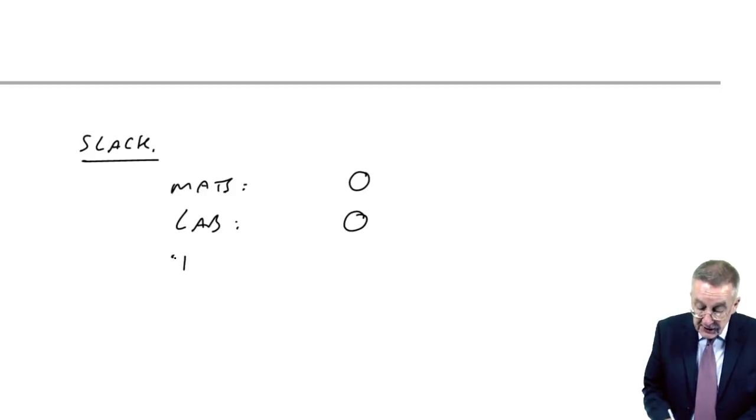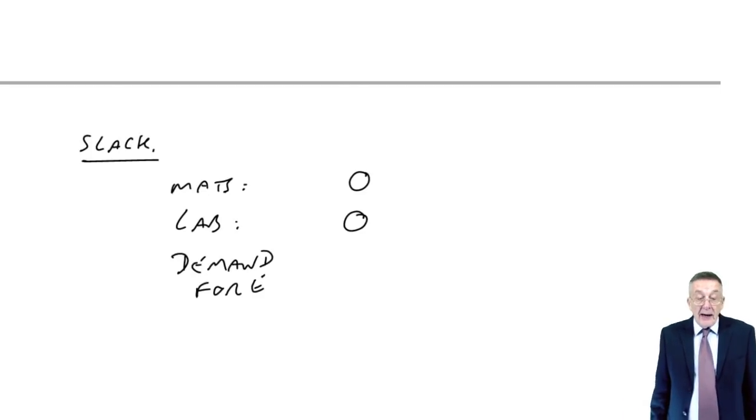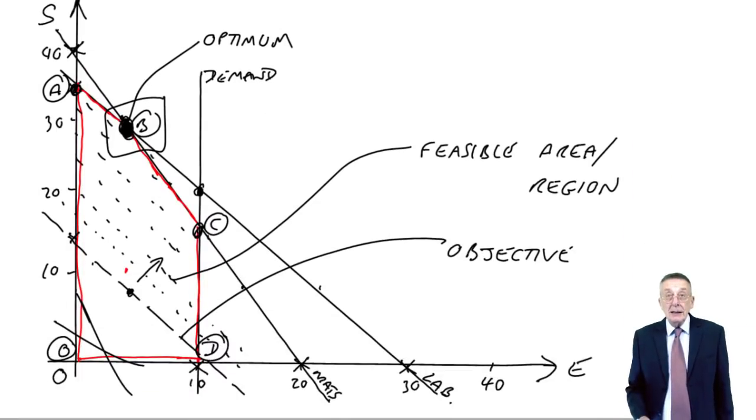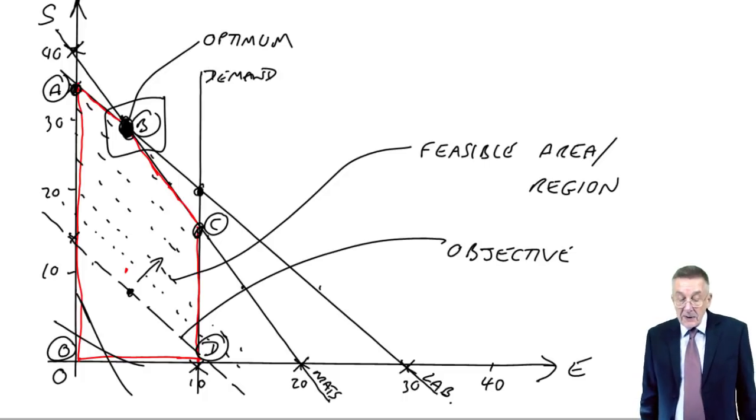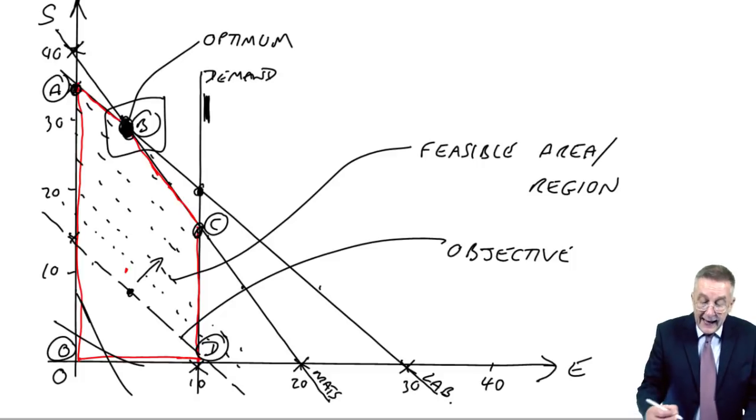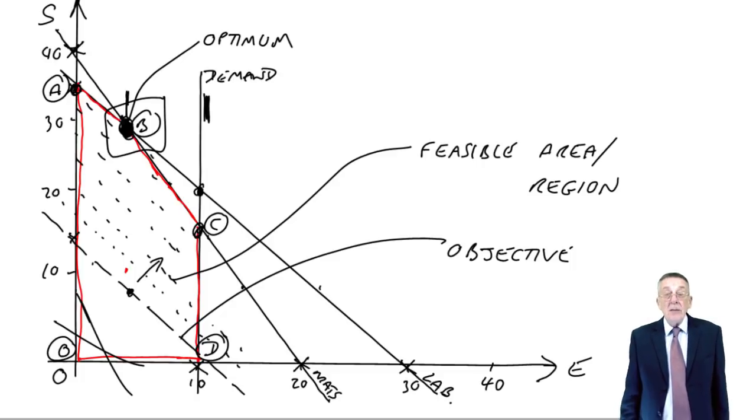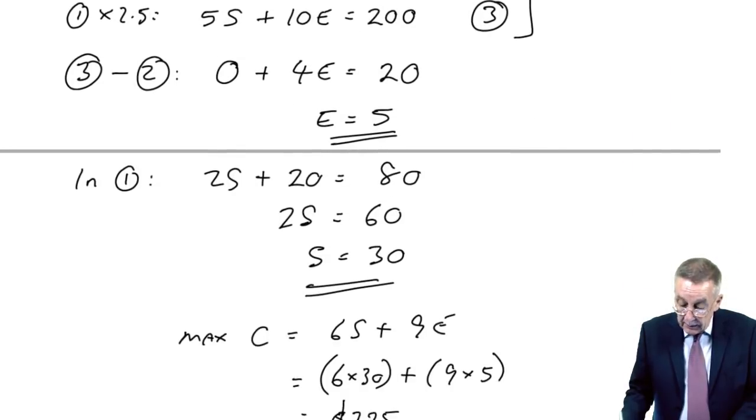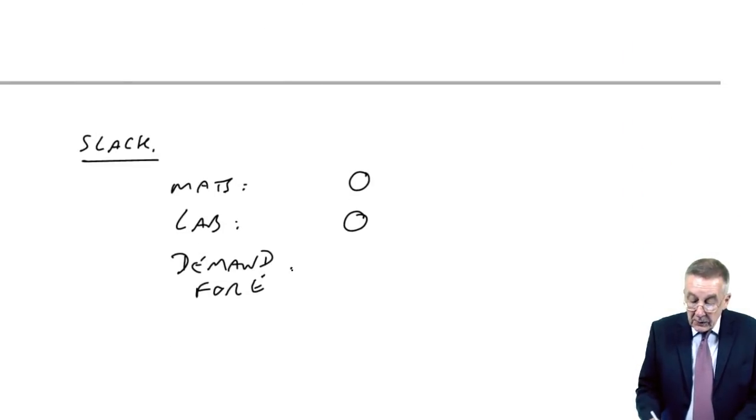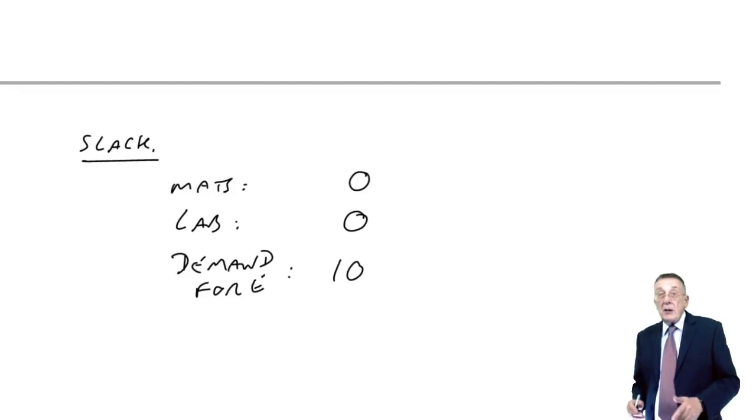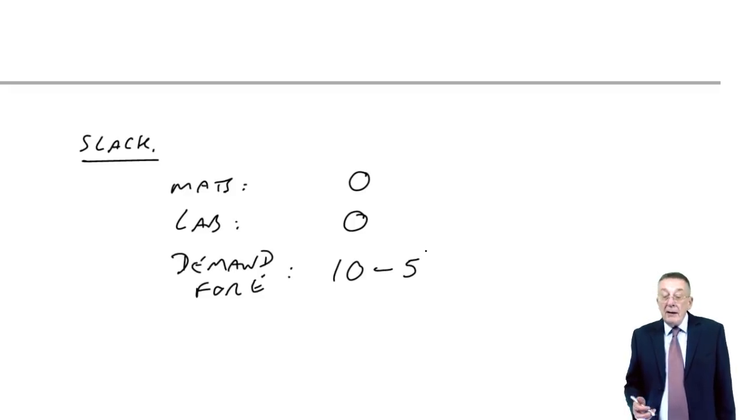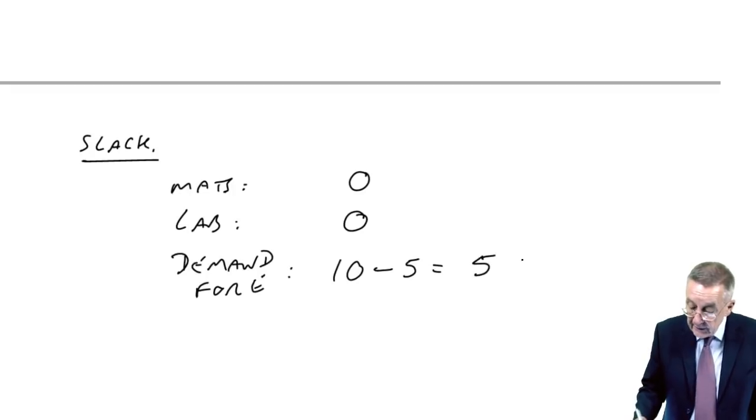The third constraint was the demand for E. The maximum was 10. Are we using all of the demand? Are we producing 10? Or is the spare demand? Well, of course, no, we're not. Because the demand line is there, and yet our optimum is only here. We're not producing as many E's as we could actually sell. And how many are we producing? We're producing 5. And so the slack, well, demand, we could have sold 10. We're only producing 5 and therefore we're only capable of selling 5. So there is spare demand. There is slack of 5 units.